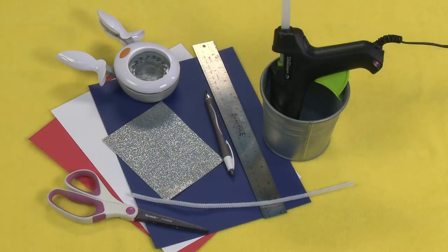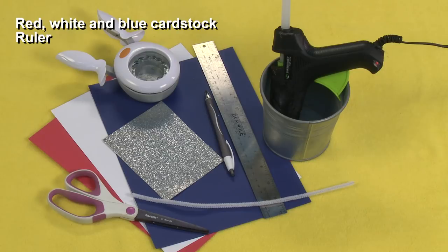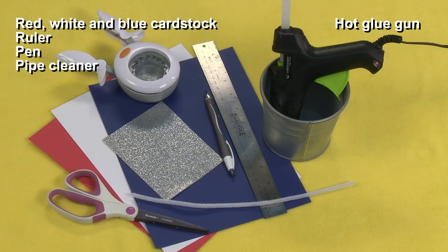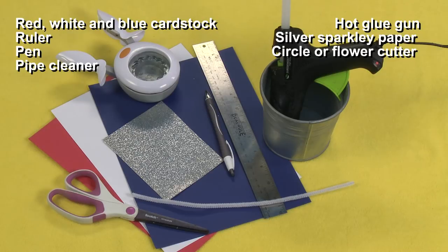For this project you will need red, white, and blue cardstock, a ruler, a pen, pipe cleaner, hot glue gun, and optional silver sparkly paper and a circle or flower cutter.